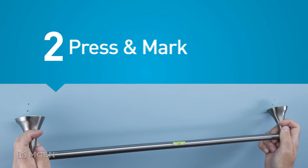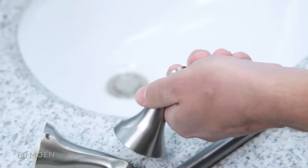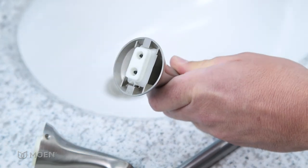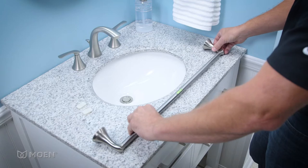Step 2: Press & Mark. Each post includes a built-in ink stamp. Remove each cover. Insert the posts onto each end of the towel bar.